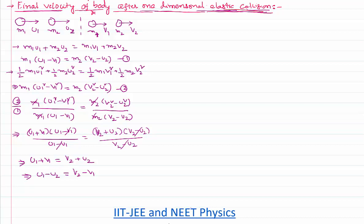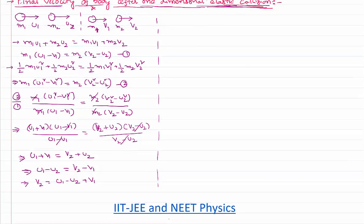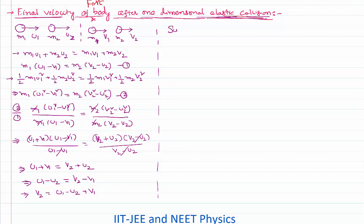Now I want to find the value of v1. To do that I need to eliminate v2. From the relative velocity equation I can write v2 as u1 minus u2 plus v1. Let us substitute this value of v2 into equation number one so that I can solve for v1.